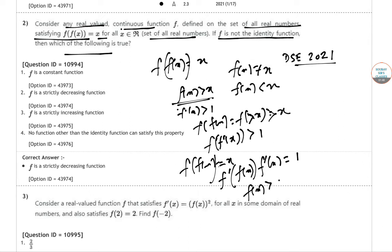So if f(x) > x, then f'(f(x)) · f'(x) is also greater than 1. But this contradicts our equation, so f(x) is not greater than x. This is only possible if f(x) < x, meaning f is a strictly decreasing function. So this is the correct answer.